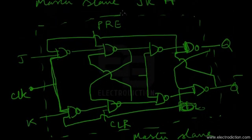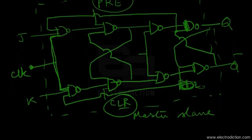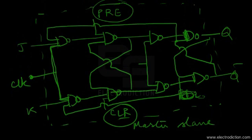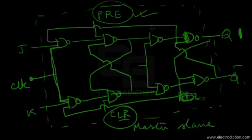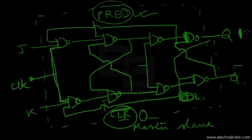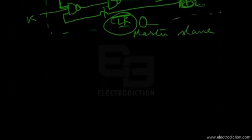In this master-slave JK flip-flop circuit, we have two additional inputs: preset and clear. Whenever a flip-flop is powered on, there is no guarantee as to what state it will output. To set the flip-flop output to logic 1, we use the preset input — applying a logic 0 signal here (active low) sets the output to logic 1. Similarly, applying a logic 0 at the clear input (also active low) sets the flip-flop output to logic 0. This allows us to define the initial state of the flip-flop.